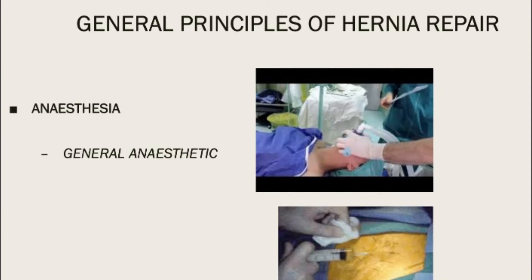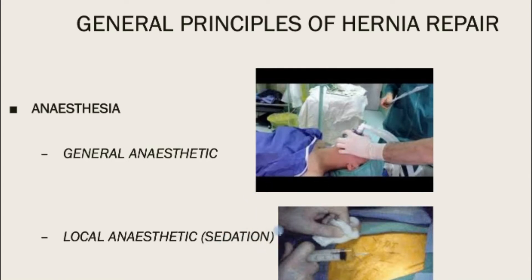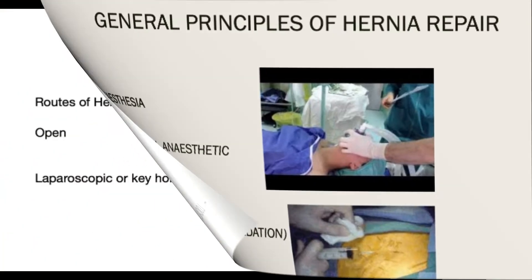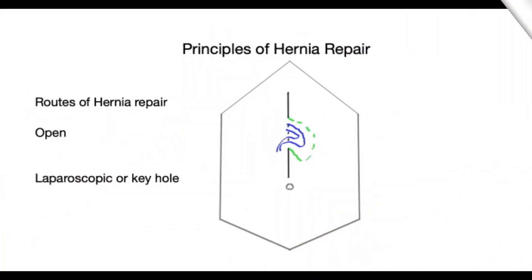For groin hernias, local anesthetic is absolutely a reasonable choice, as seen in the picture here, and that can be supplemented with some sedation. Once the anesthetic is in place, the surgeon will decide what route to use for the operation.